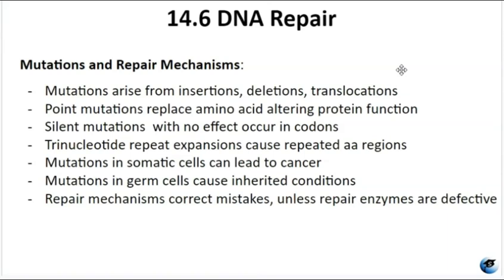DNA replication is a precise process, but errors can occur, such as when DNA polymerase inserts the wrong base. Mutations can also arise from DNA damage — either induced or spontaneous. Induced mutations result from exposure to chemicals or environmental agents; spontaneous mutations occur naturally. Mutations can affect a single base pair, resulting in substitutions or silent mutations. Some mutations replace one amino acid with another, impacting protein function; others generate stop codons that terminate protein synthesis too early. Trinucleotide repeat expansions, insertions, deletions, and translocations are all different types of mutations. Mutations in repair genes have been linked to various forms of cancer.